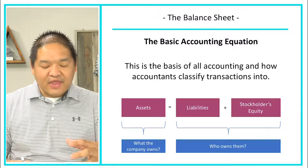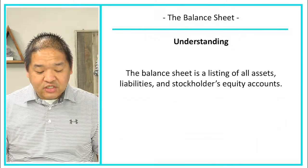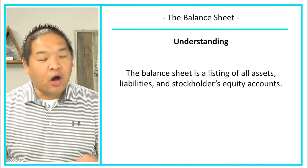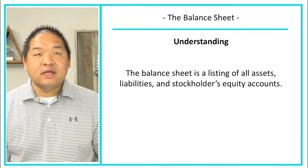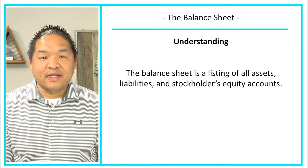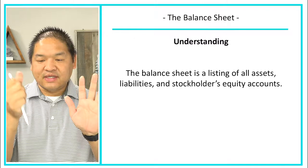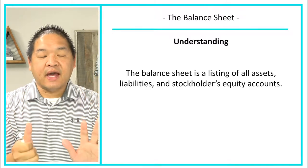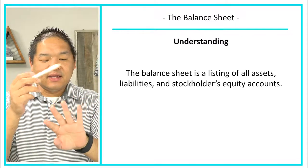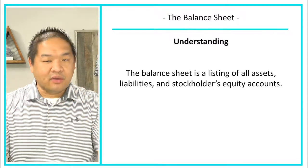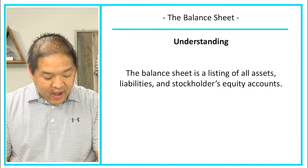The balance sheet is based on this equation. It's a listing of all assets, all liabilities, and all stockholders' equity accounts. We talked about the income statement having revenues and expenses — that's two of the six buckets. Here we've got assets, liabilities, and owner's equity or owner's capital. We list all of the accounts and all of the balances.